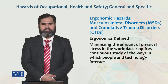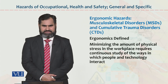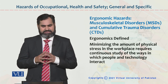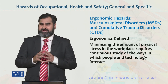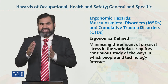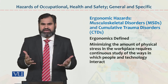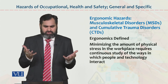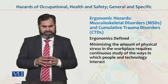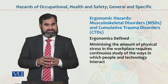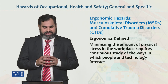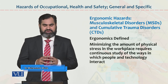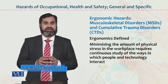Dear students, the topic which we are going to discuss is hazards of occupational safety, health — general and specific. Occupational safety and health के हवाले से जो hazards हैं उनको देखना है — वो hazards जो generally भी हैं और specific भी हैं दोनों को देखना है. For example, ergonomic hazards क्या हैं, musculoskeletal disorders क्या हैं, और cumulative trauma disorders क्या हैं — इन्हें हम लोग एक-एक करके देखते हैं.